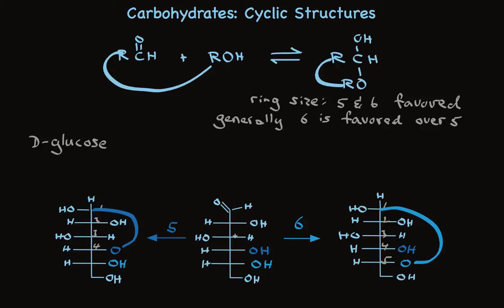As I mentioned, hemiacetals are favored over aldehydes. And in the case of D-glucose, there's less than one percent of the aldehyde form. And at equilibrium for D-glucose, there's almost no five-membered ring. It's almost all six-membered ring.